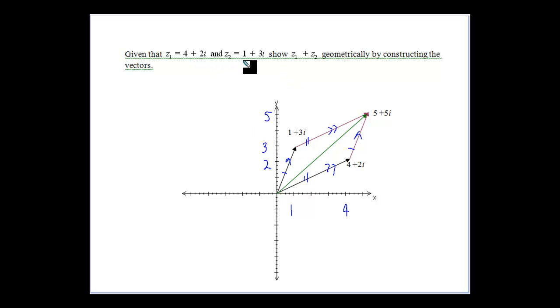We've got 4 plus 2i for z1. Z2 is 1 plus 3i. So if we did the addition here just to show it, our new vector would be for the z1 plus z2 would be equal to 4 plus 1 is 5, and 2i plus 3i equals 5i. So we should end up with that from our vector addition.